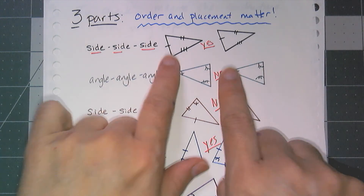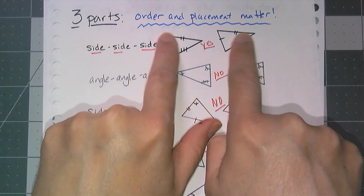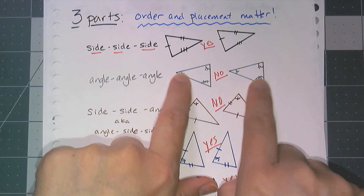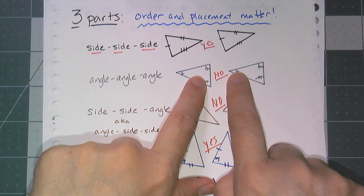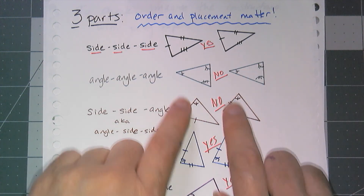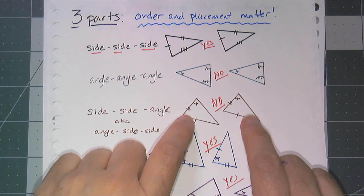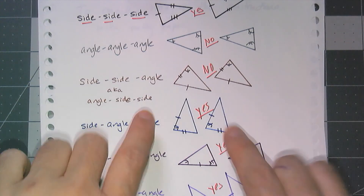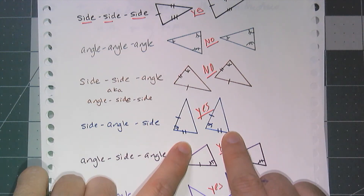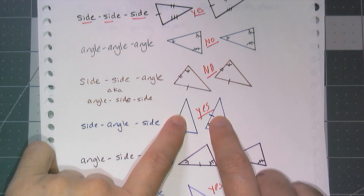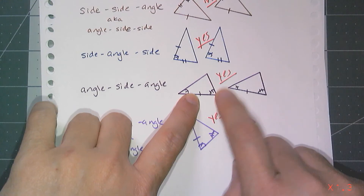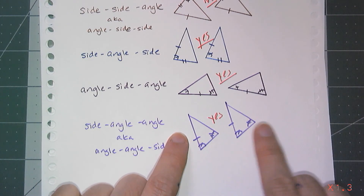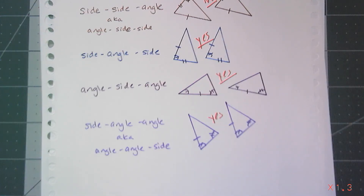So to summarize: if I have two triangles marked with all three sides congruent — congruent. If I have all three angles marked congruent — not congruent. If I have side-side-angle going around in a circle — not congruent. Side-angle-side — congruent. Angle-side-angle — congruent. And angle-angle-side or side-angle-angle — congruent.